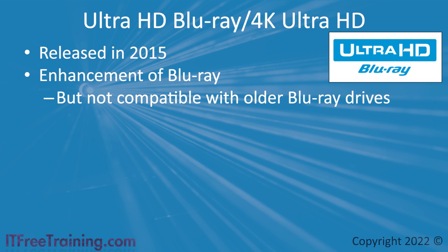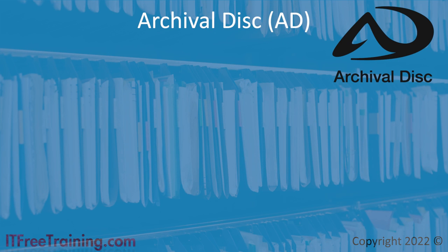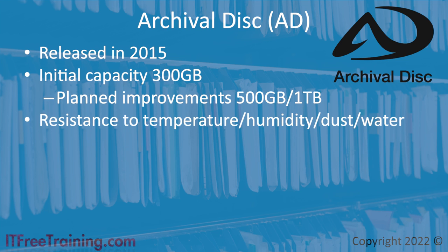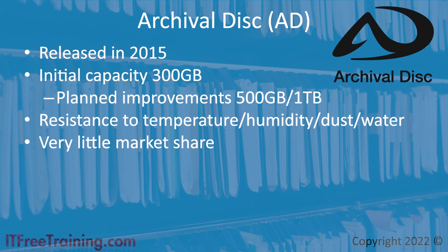One possible future for optical media is archival disk. This technology was released in 2015, the same year as Ultra HD Blu-ray, with an initial capacity of 300GB, and planned improvements to increase the capacity to 500GB and then 1TB. Archival disk has improved resistance to temperature, humidity, dust, and water, making it a better choice for storing data long-term. At the time of making this video, archival disks did not have a lot of market share, and given the current market, it would probably be difficult to obtain some. It seems the market is staying with Blu-ray, at least for the moment.